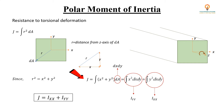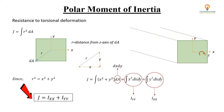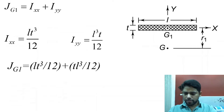Now if you further expand this, since dA equals dx·dy, you get: the integration of x² dx plus the integration of y² dy. The first term is actually your Ixx — the second moment of area about the x axis — and the second term gives you Iyy — the second moment of area about the y axis. So your polar moment of inertia J can be written as Ixx plus Iyy.